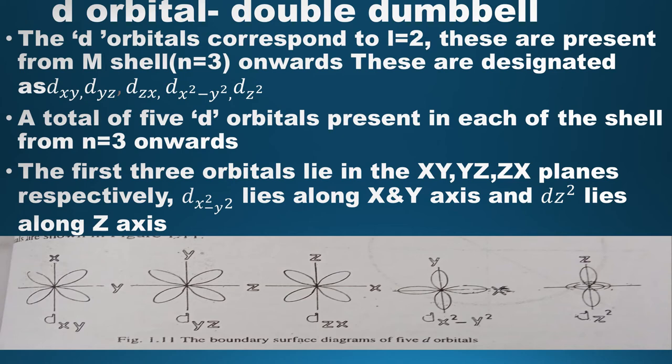Children, see the diagram — five d orbitals are shown: dxy, dyz, dzx, dx²−y², and dz². Their orientations are shown in the figure.